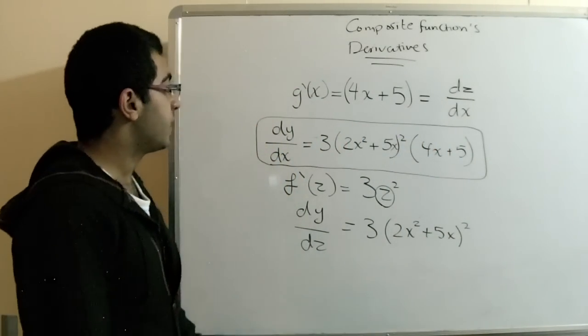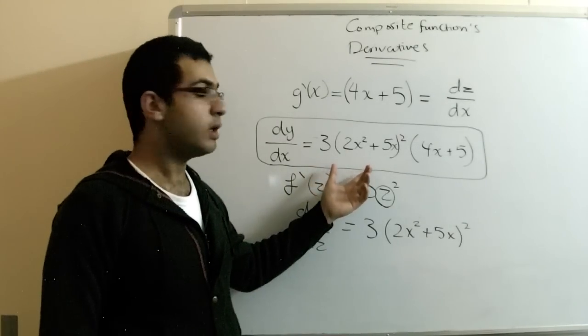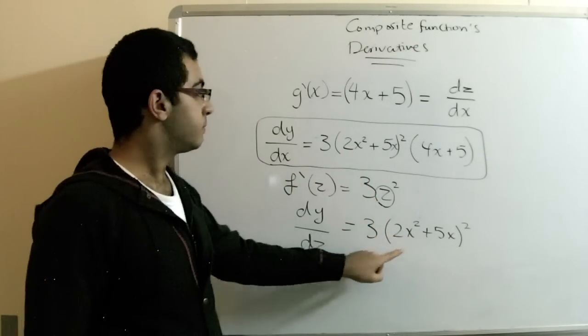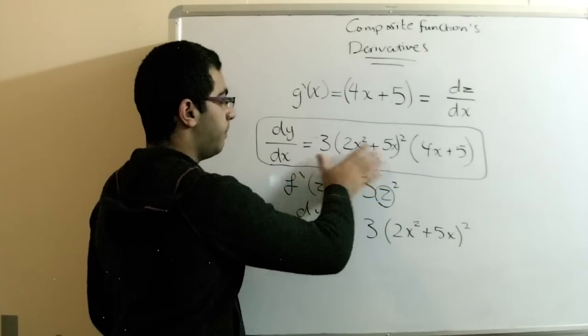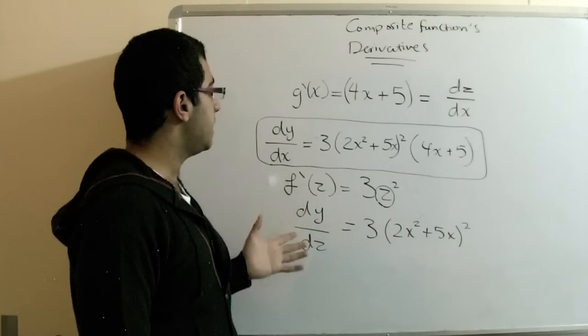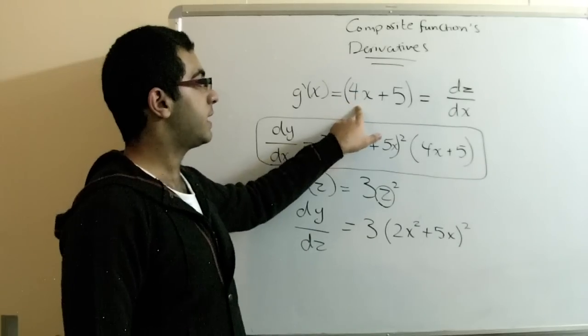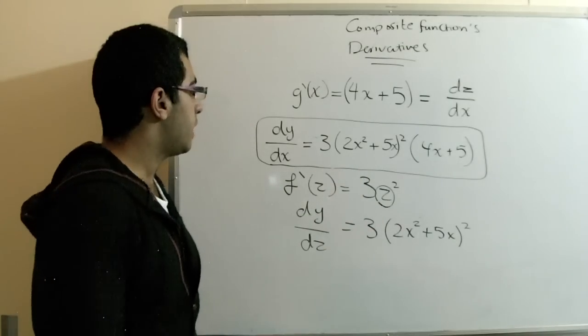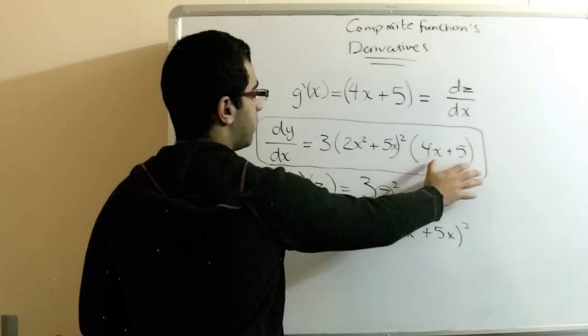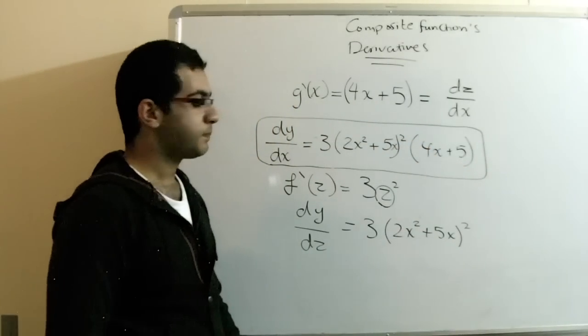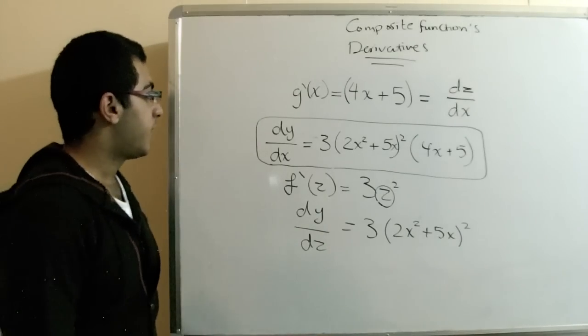What we do is get the derivative of the general function and substitute with the z value that we have. Then our first part is complete. The second part is easily getting the derivative of the z function, which is 4x plus 5. And we just multiply it by our expression. We can distribute the 3 into the bracket to get 12x plus 15 to simplify it more.